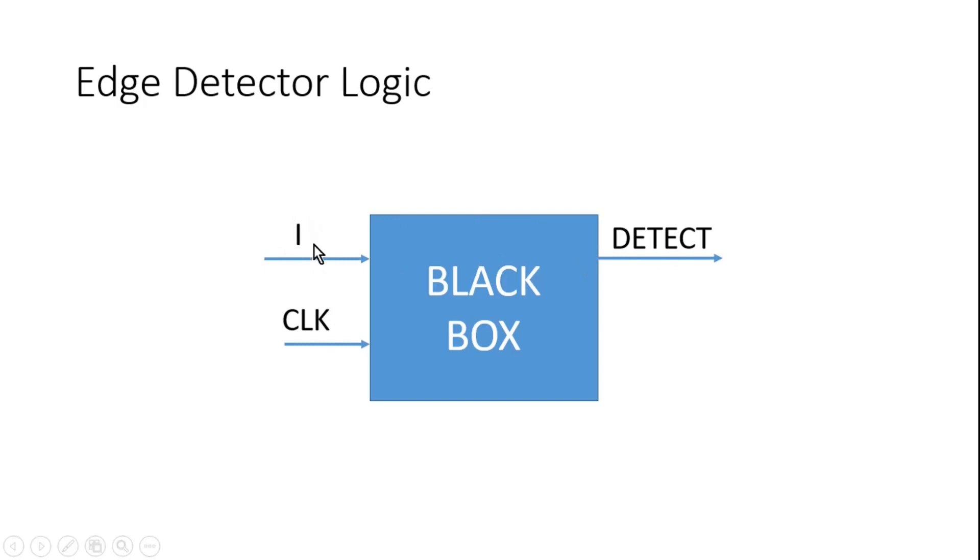Whenever there is a change in input I, it may go from 0 to 1 or may go from 1 to 0. In both conditions, this detect signal should go high for one clock cycle.